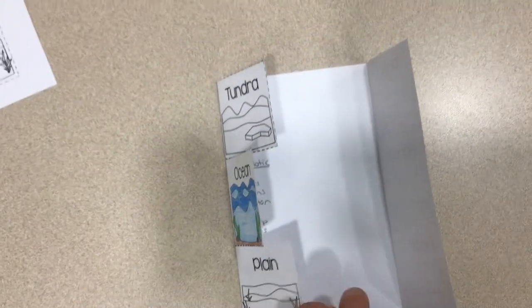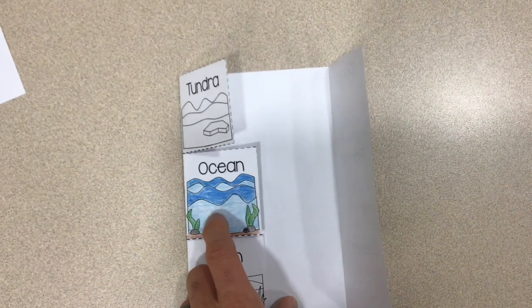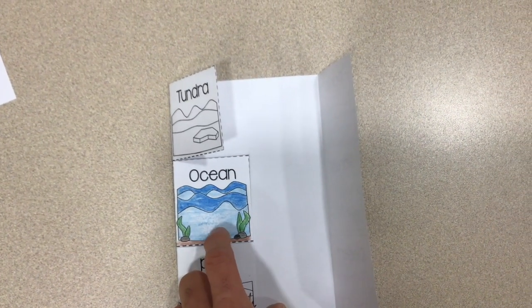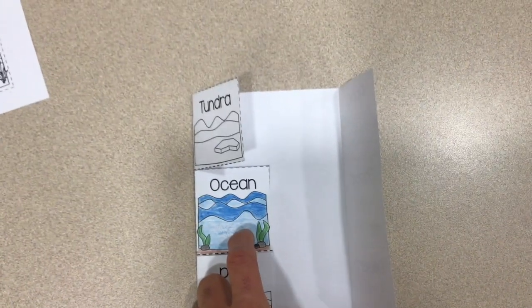All right, so your job for each one of these is, and here I've done ocean already, you're going to color the outside. You've got to color within the lines. Do a good job with your coloring. Make sure that it's accurate, that it makes sense for what you're coloring. Like I wouldn't color the ocean red.